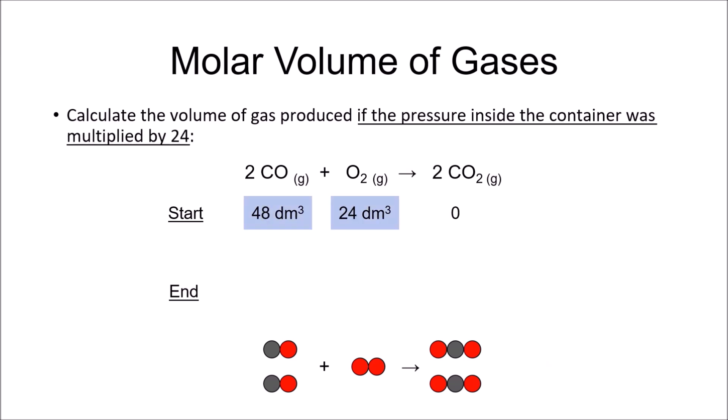Just to make it more obvious, let's assume the pressure was multiplied by 24, so one mole of gas at this pressure would have a volume of one cubic decimetre. In this case, two cubic decimetres of carbon monoxide would react with one cubic decimetre of oxygen to give two cubic decimetres of carbon dioxide. The ratio can be seen more clearly here, two moles of gas react with one mole of gas to make two moles of gas.